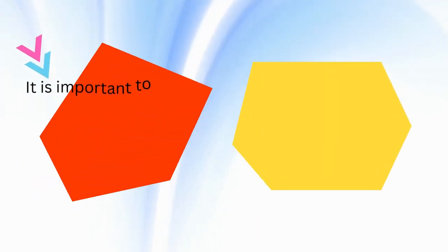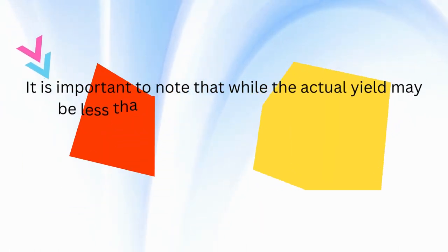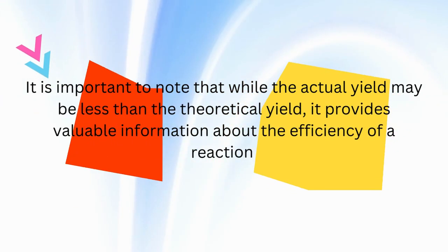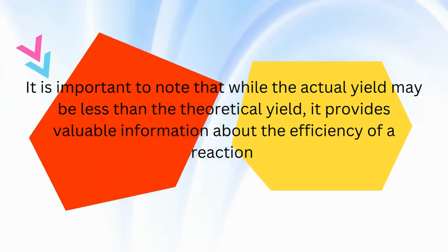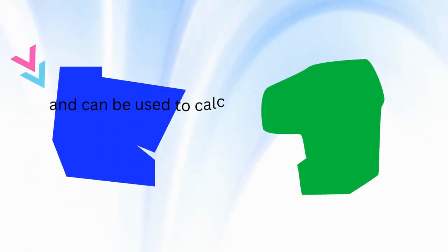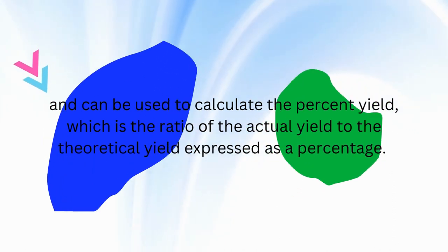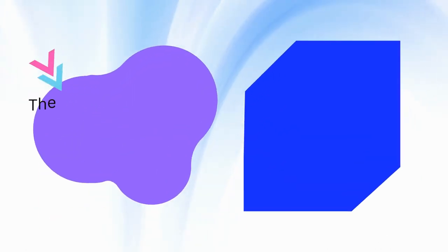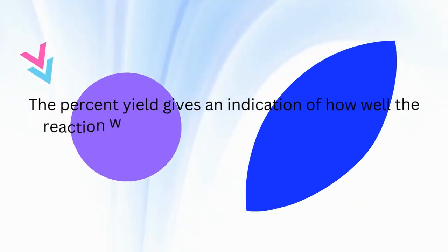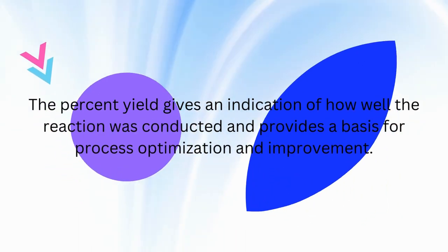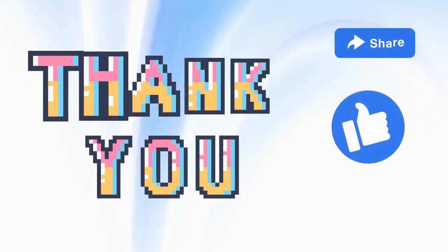Conclusion. It is important to note that while the actual yield may be less than the theoretical yield, it provides valuable information about the efficiency of a reaction and can be used to calculate the percent yield, which is the ratio of the actual yield to the theoretical yield expressed as a percentage. The percent yield gives an indication of how well the reaction was conducted and provides a basis for process optimization and improvement. Thank you.